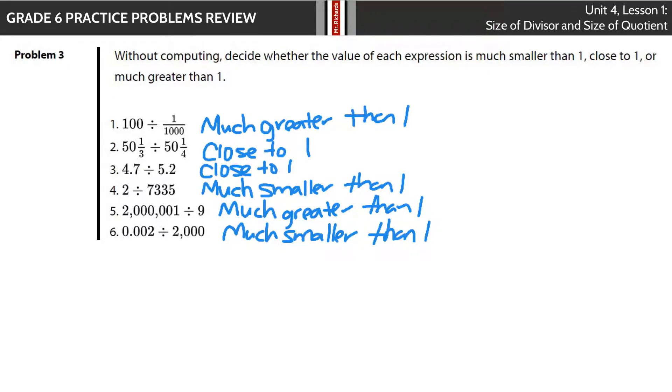Without computing, we're going to do something very similar to Problem 2. Decide whether the value of each expression is much smaller than 1, close to 1, or much greater than 1. If you take a big number and divide it by a small number, you get something much greater than 1. 100 divided by 0.001 is actually 100,000, so it's much greater than 1. If you have two numbers that are close together, like 50⅓ divided by 50¼, you're going to get something close to 1.